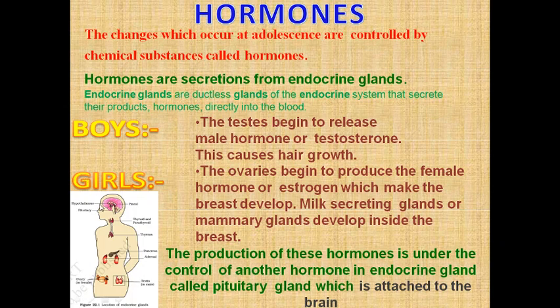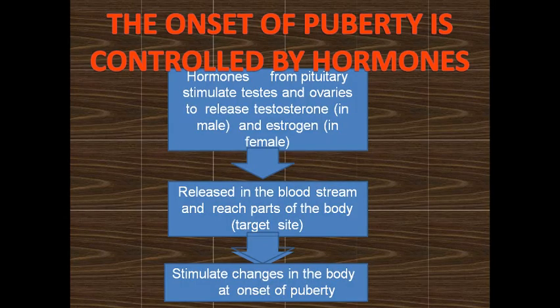The production of these hormones is under the control of another hormone from the endocrine gland itself, known as the pituitary, which is attached to the brain. This is pituitary shown in the diagram; these are testes and these are ovaries. All the changes that take place on the onset of puberty are under the control of these hormones.